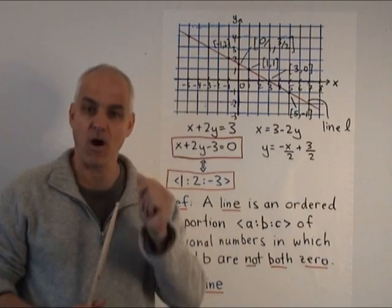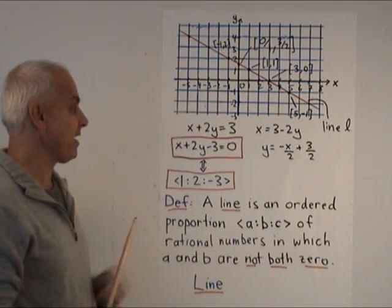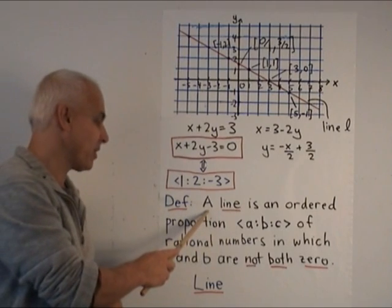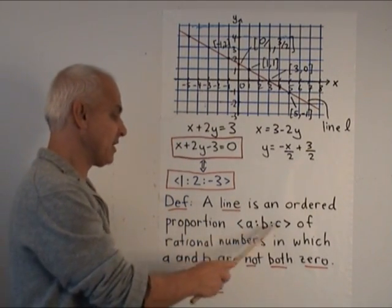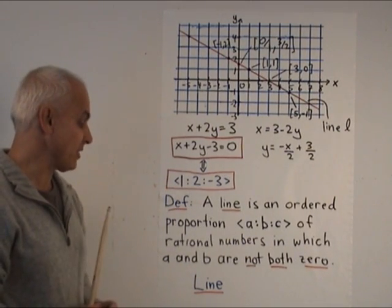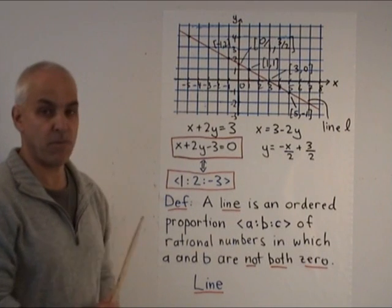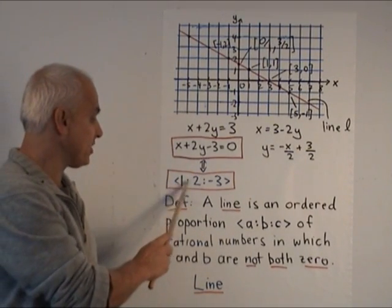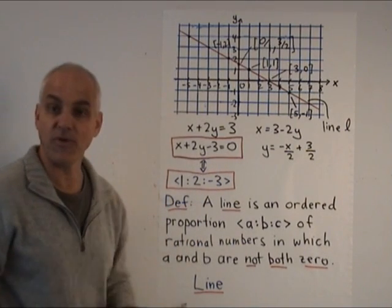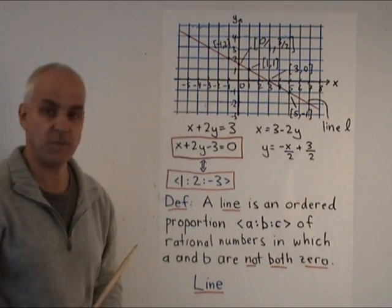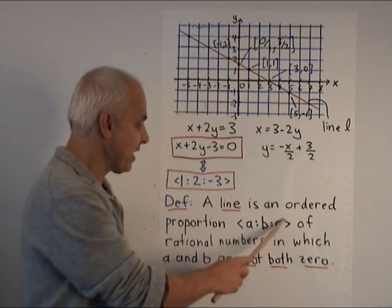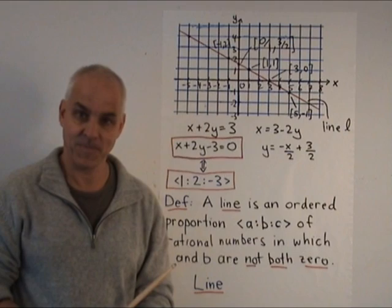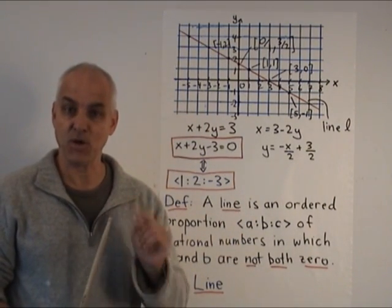This is the motivation for our actual formal definition. The actual definition of a line doesn't involve this picture at all officially. Of course, it's in the back of our minds. So here is what a line is. It is an ordered proportion, a to b to c, of rational numbers, with the proviso that a and b are not both zero. Why do we need that? Well, the a and the b are the coefficients of the x and the y. And if they are both zero, then we would have an equation like minus 3 equals zero, which doesn't make any sense. So we need at least one of these coefficients to be non-zero. Note that we've enclosed the line in pointed brackets. That gives us a new type of mathematical object, which we call a line. So now we have points, and we have lines defined purely arithmetically.